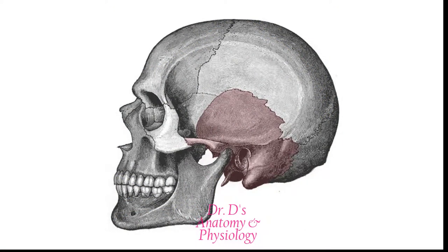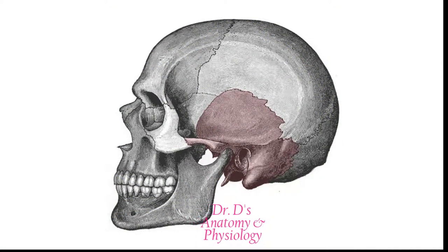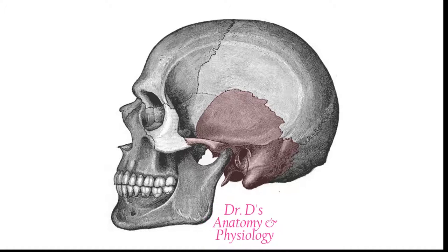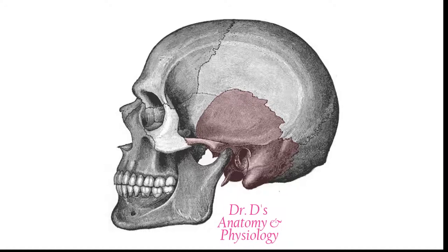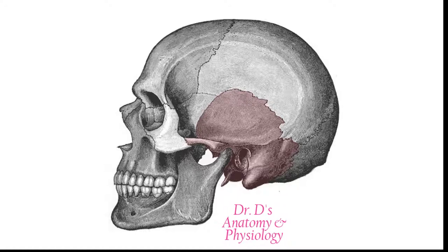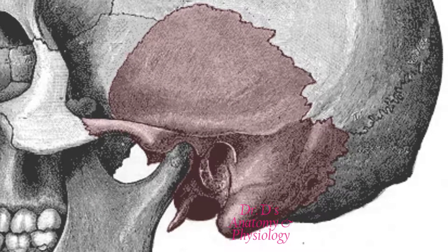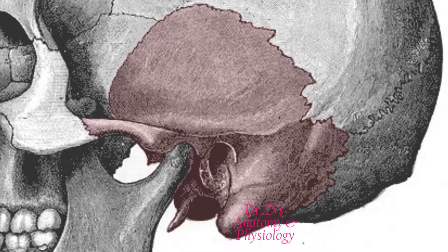To further talk about these three parts, I turn to a figure from Gray's Anatomy. Here we have our skull with the temporal bone highlighted, and when we take a closer look we can see the three major parts from this lateral view.